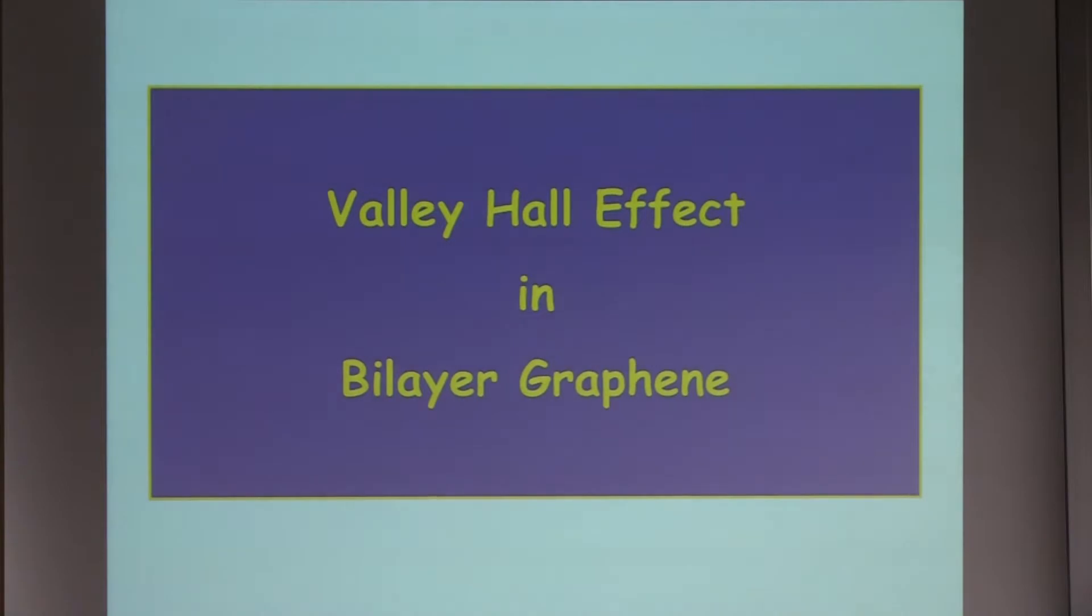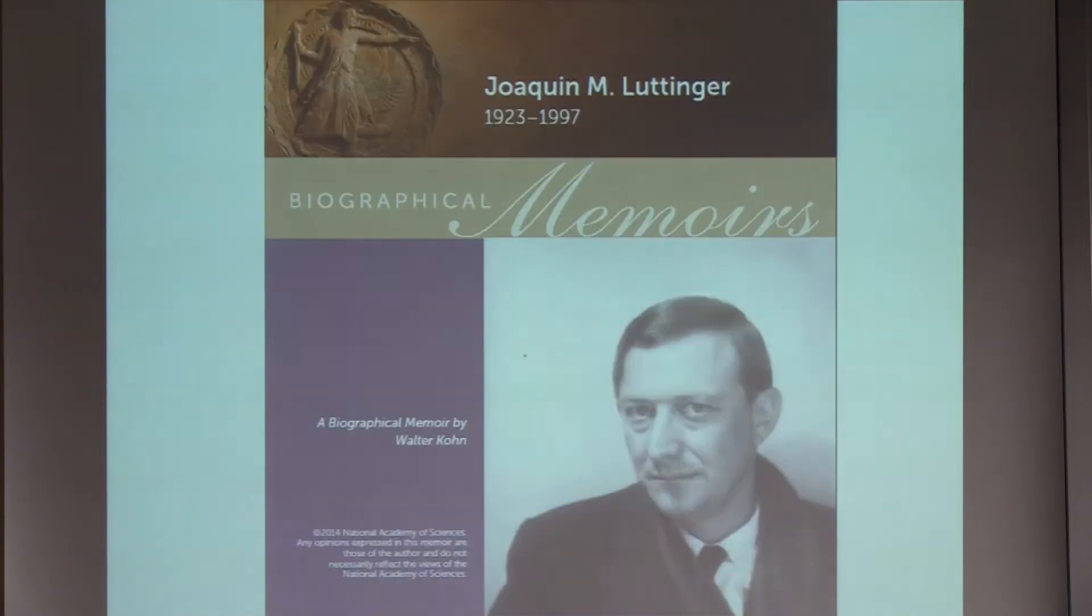My talk is connected to the topological in the title of this workshop in the sense that it's connected to quantum valley Hall effect in bilayer graphene systems. It's also connected to moiré patterns. What I'm going to explain is how those two things together give you a network of chiral states.